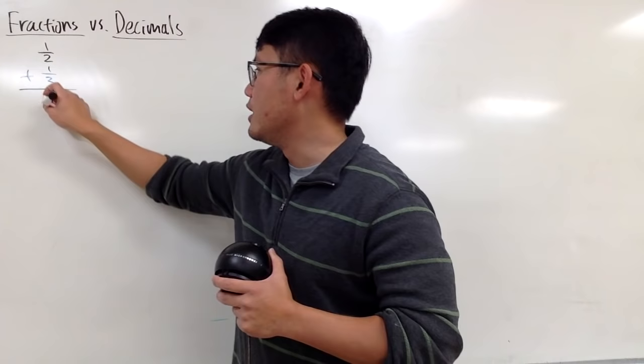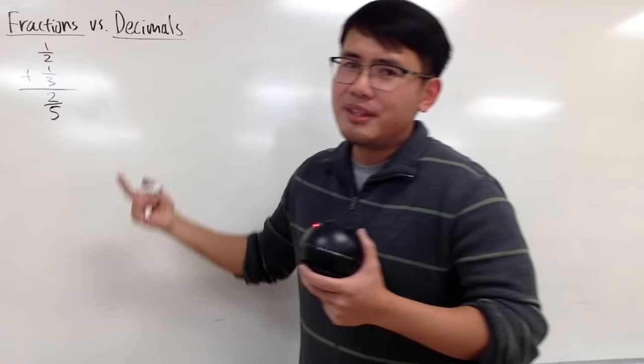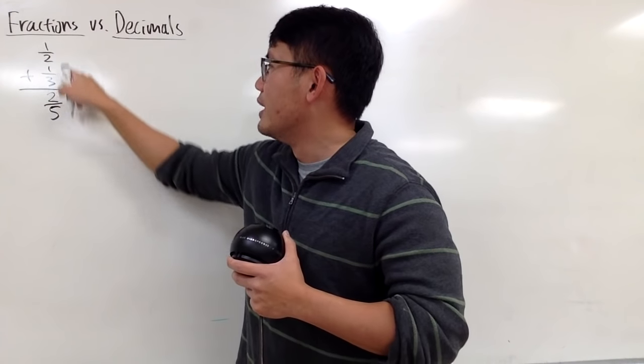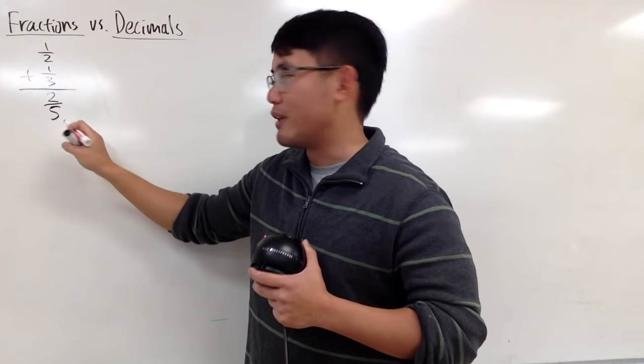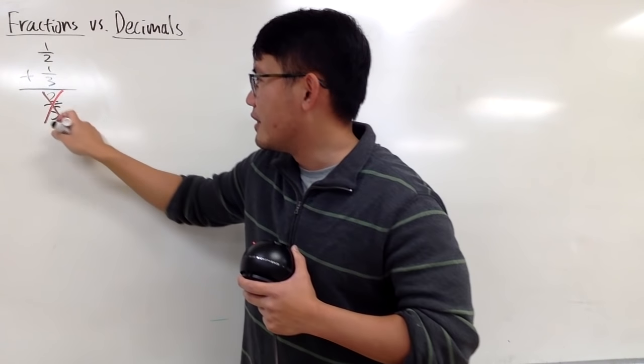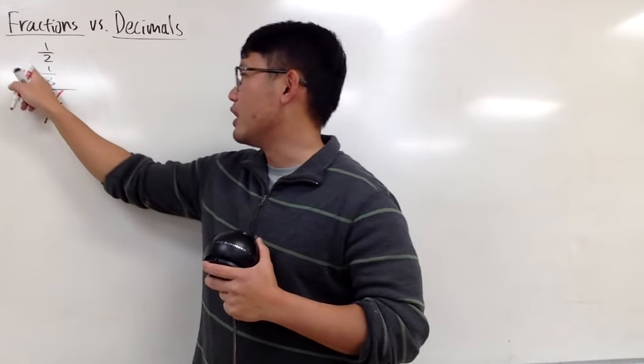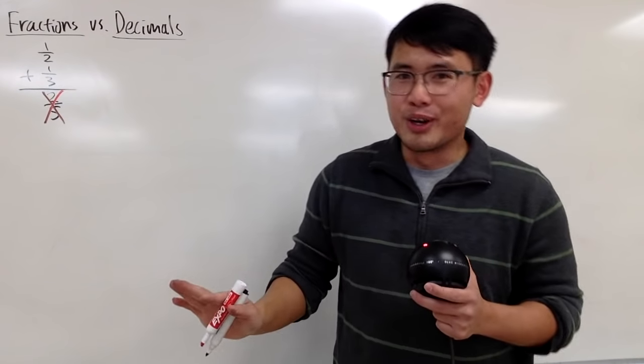Yes, they would just say the answer should be 2 over 5, because it seems legit, 1 plus 1 is 2, and then 2 plus 3 is 5. But of course, as we all know, this right here is not correct, unless you have a circle right here. But let's not talk about that.